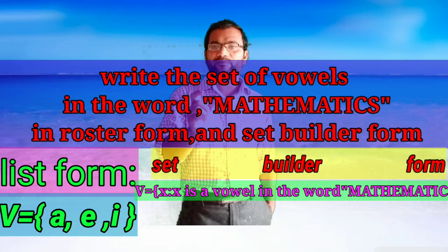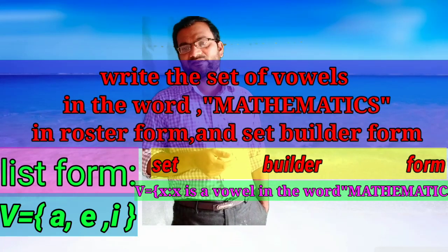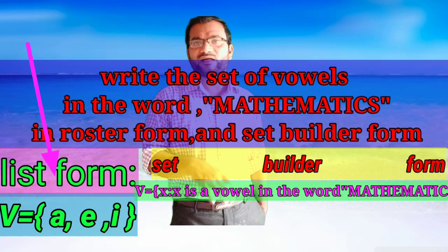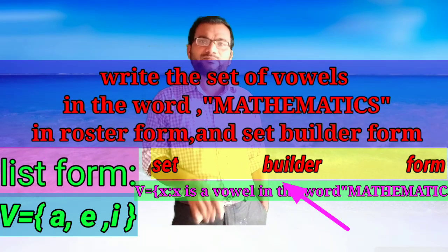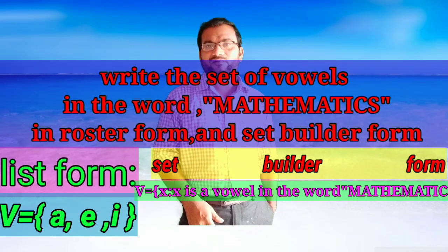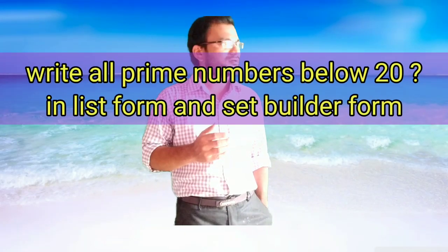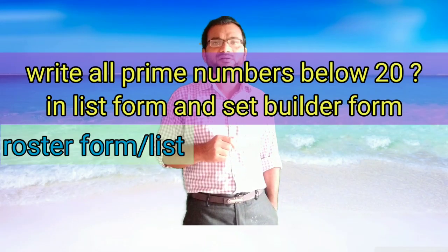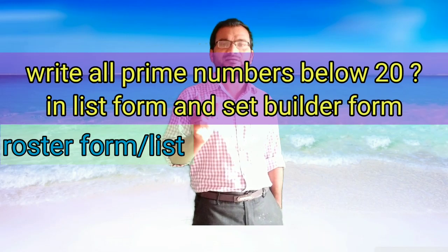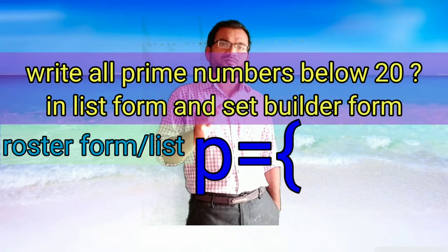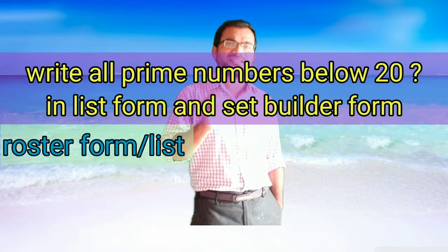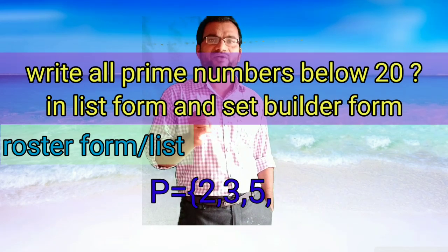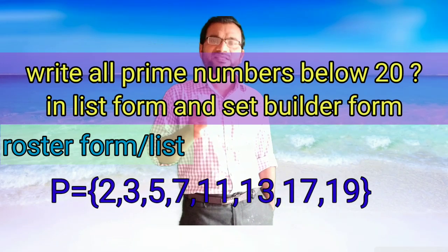Thus, a set can be represented in two ways: roster (tabular/list) form and set builder (rule) form. For example, write the prime numbers less than 20 in roster form and set builder form. In roster form: P = {2, 3, 5, 7, 11, 13, 17, 19}. The numbers are listed, separated by commas, and the whole thing is enclosed in curly brackets.